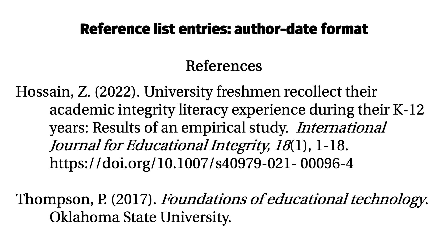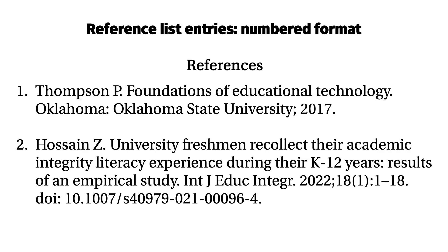This is an example of a reference list compiled using the author-date format. Examples of referencing styles that use the author-date format include APA 7 and Harvard. This specific example shows how to reference in APA 7 style. This is a reference list compiled using a numbered format. Examples of referencing styles that use the numbered format include Vancouver, JAMA, and IEEE. This specific example shows how to reference in Vancouver style.